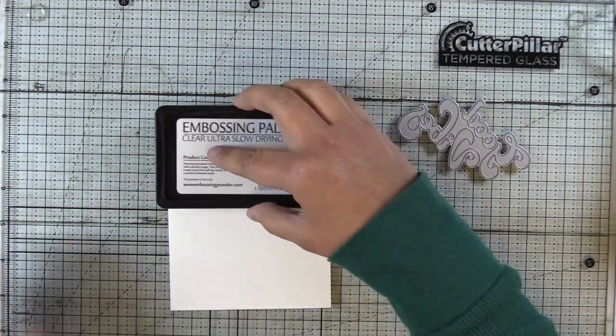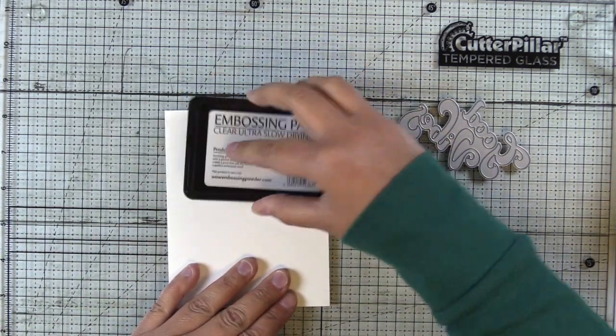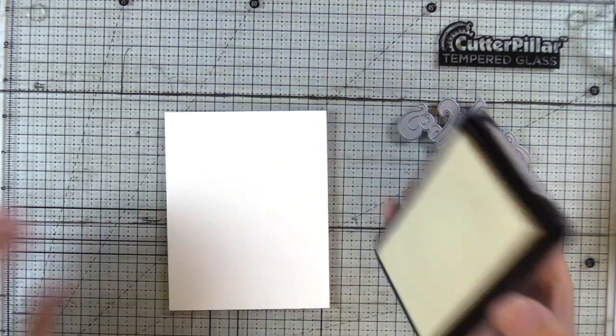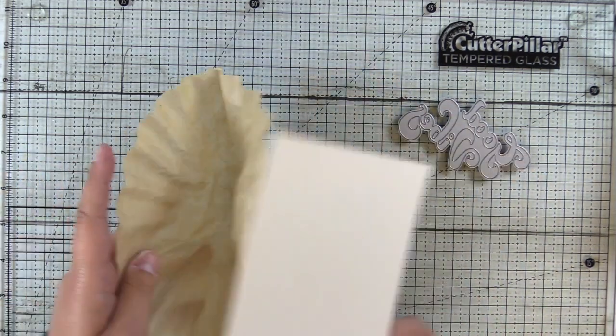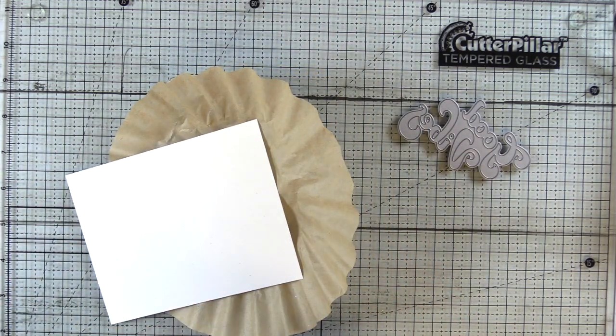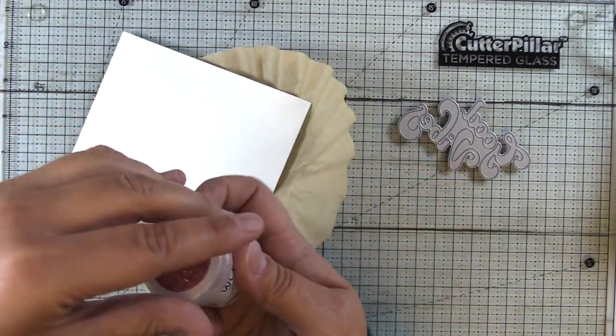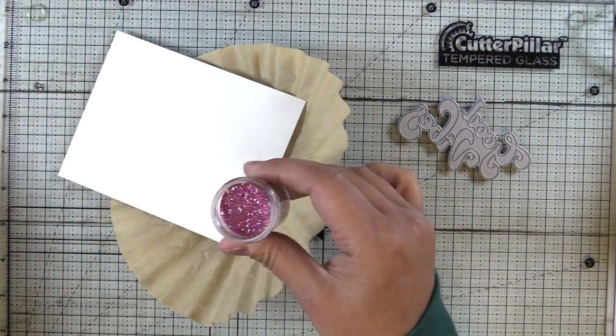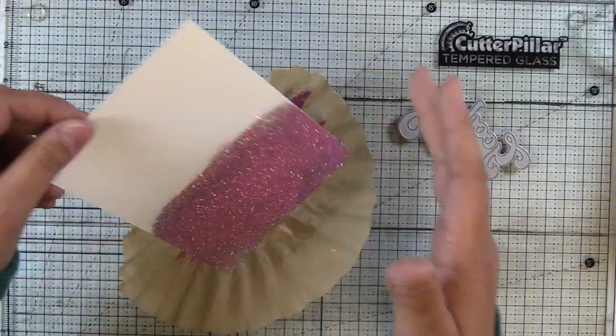So here I have the good vibes die from Simon Says Stamp and I had it sitting on top of my ink pad just so I would have an idea of how much of the paper I needed to ink up. So I'm just smooshing the ink pad down directly onto the cardstock. And this time we're going to emboss a large area so that we can die cut the embossed paper. So rather than fiddling around with trying to emboss the die cuts, we're going to emboss the paper and then die cut the paper.